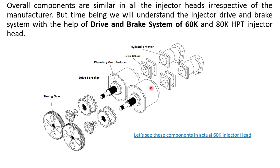Between the motors and the planetary gear reducer, there are two disc brakes. These brakes work on a fail-safe mechanism — we have to provide hydraulic pressure to keep them disengaged. If hydraulic pressure is lost, these brakes will be automatically applied.